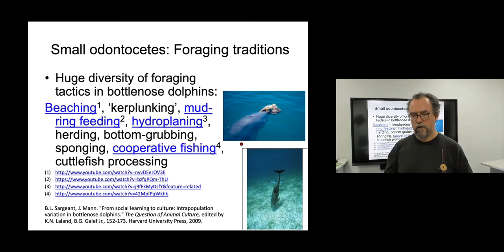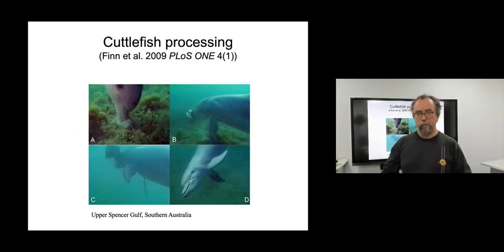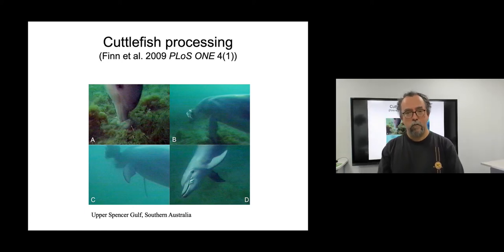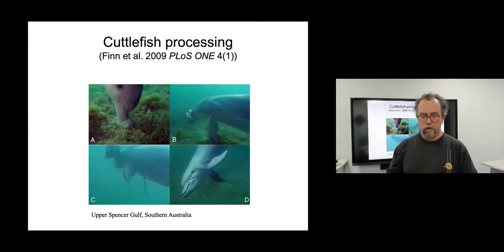So two are shown in this slide. The first is sponging, where bottlenose dolphins in Shark Bay in Australia carry conical sponges on their nose, and this is thought to protect them when they forage by bottom grubbing. Here is bottom grubbing in action. This is a dolphin digging its nose into the sand in order to rouse out a fish that is detected through echolocation buried in the seabed. One particularly interesting example, I think, where we just have an observation of a behavior, but we don't know very much else about its development, but this is obviously an area where it would be very good to have ongoing research, is this behavior of cuttlefish processing, which is shown in one place, the upper Spencer Gulf in southern Australia that we're aware of.